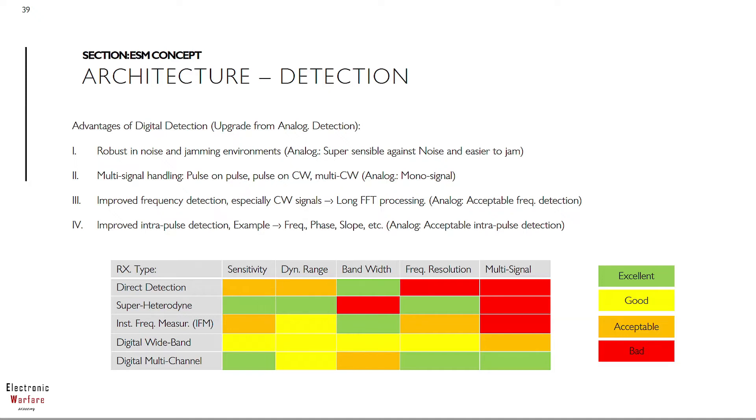As a summary, here I have attached a simple table describing different receiver types and each performance when it comes to parameter as sensitivity, dynamic range, bandwidth, frequency resolution, and multi-signal capability. I think this is quite intuitive, nevertheless please contact us if you need further information or clarification. So table, yeah, as you can see here, just let's focus on the digital wideband for example. A digital wideband, as you can see, is pretty much good in all fields when it comes to sensitivity, dynamic range, bandwidth, frequency resolution, and multi-signal, yeah acceptable.